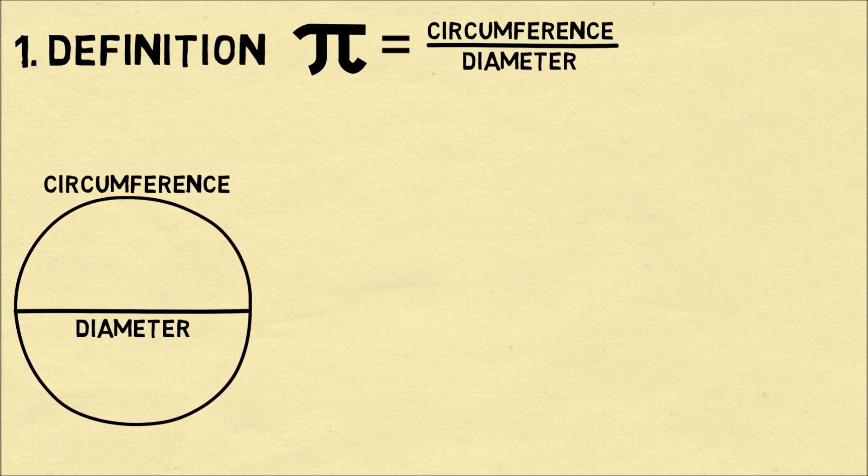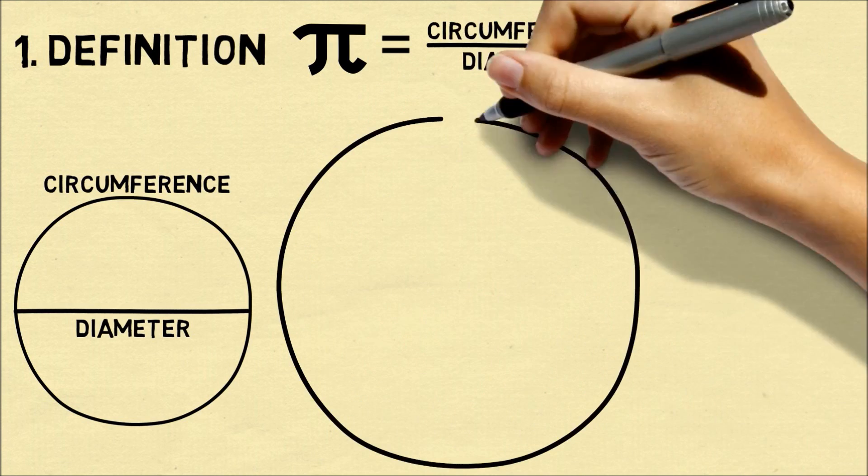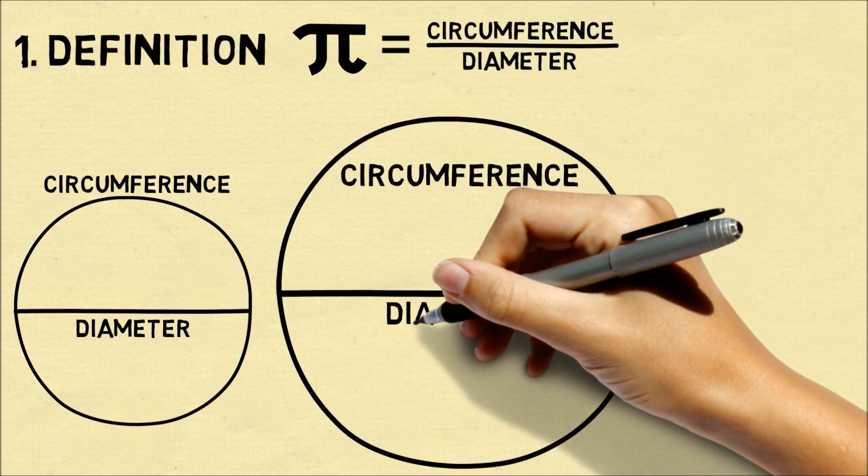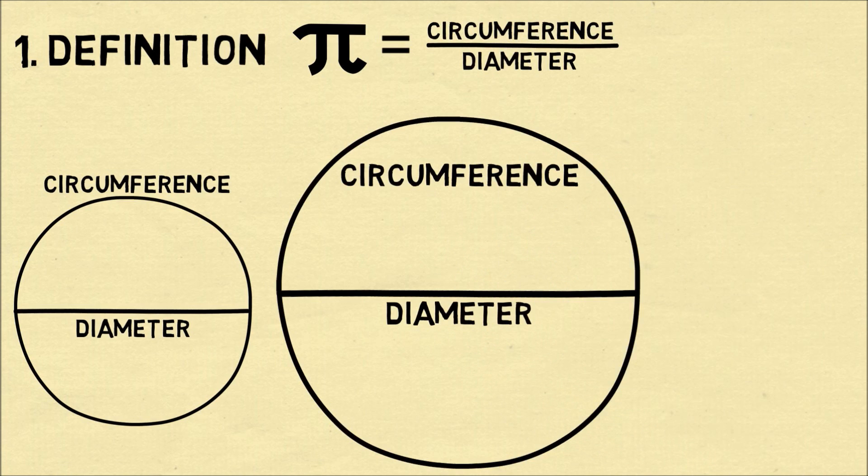What's special is this is true for every single circle. Whether the circle is very big or whether the circle is very small, pi will always be the ratio of the circumference to the diameter for every single circle.